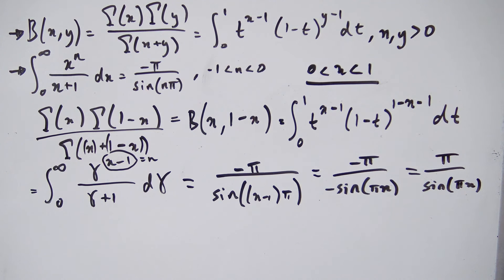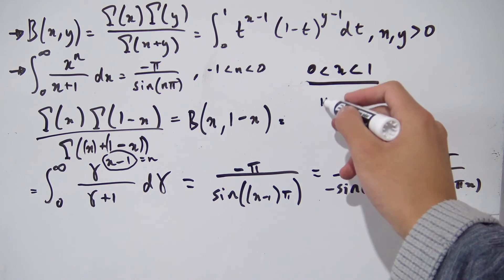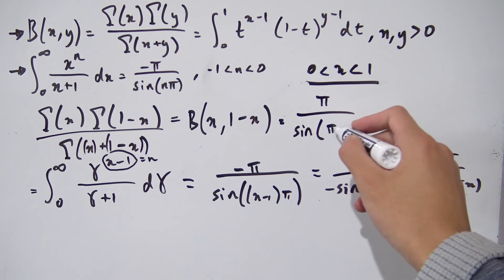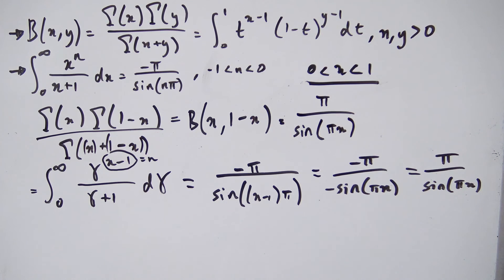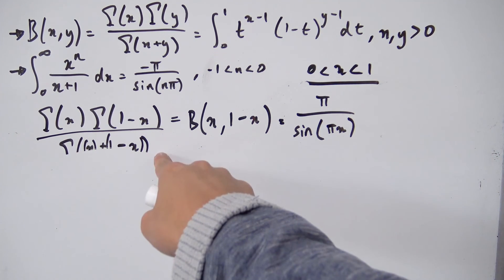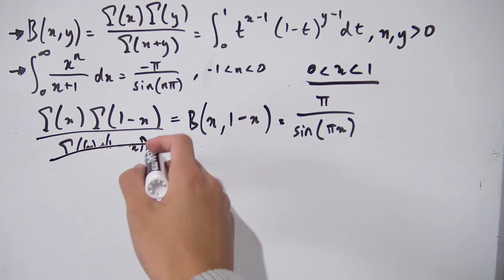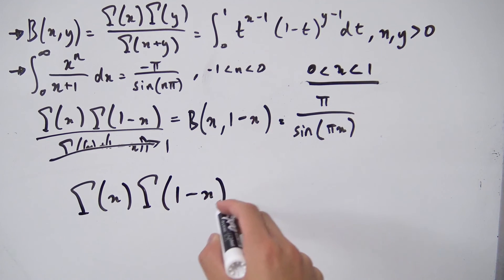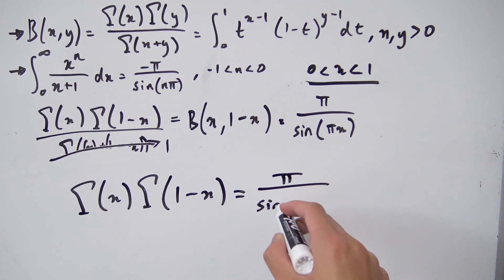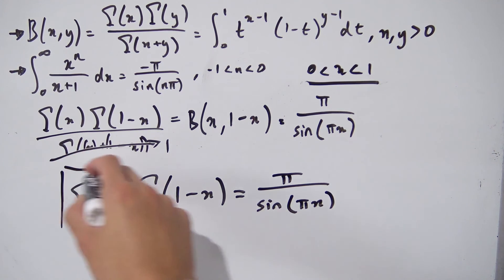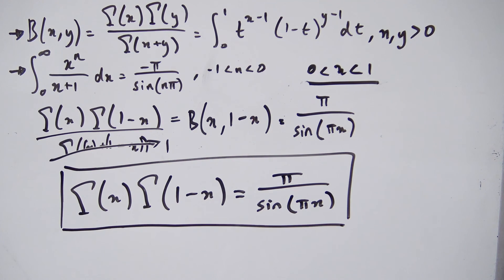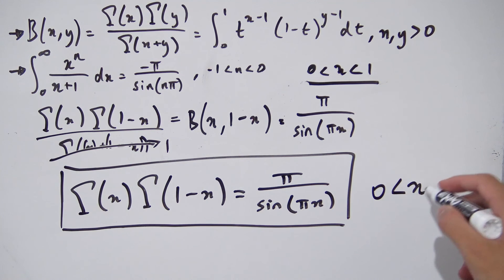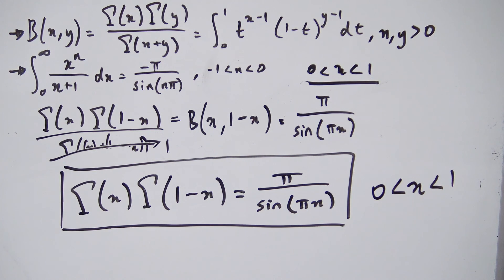So what did we just show? We showed that beta(x, 1-x) equals pi over sine(pi·x). But beta(x, 1-x) was exactly gamma(x) times gamma(1-x) over gamma(x + 1-x), and that denominator was 1. Therefore, gamma(x) times gamma(1-x) equals pi over sine(pi·x). That is Euler's Reflection Formula — a product of gamma functions producing a sine function, valid for x strictly between 0 and 1.